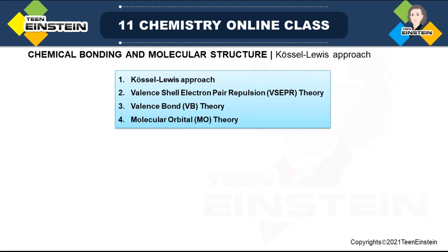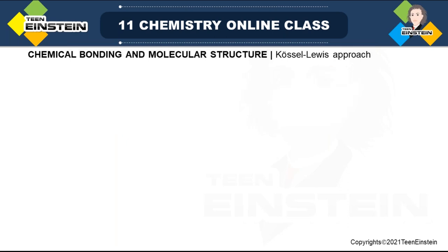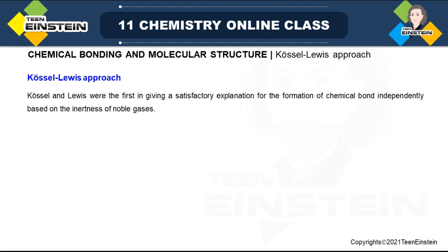To understand chemical bonding, there are basically different types of approaches. Scientists use some theory to explain bonding, but with evolution of theory, old theories get discarded. There are four theories: the Kossel-Lewis approach, VSEPR theory, valence bond theory (VBT), and molecular orbital theory (MOT). As you move from the first to the fourth, the theories become more and more advanced. We will start from the Kossel-Lewis approach, which is the preliminary theory compared to the other three.